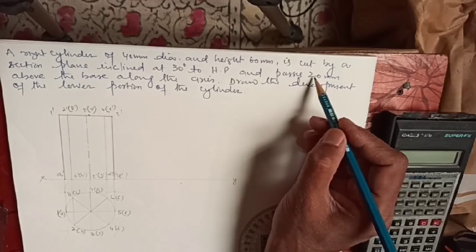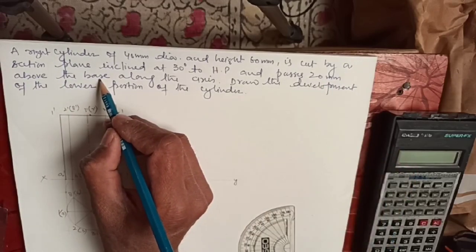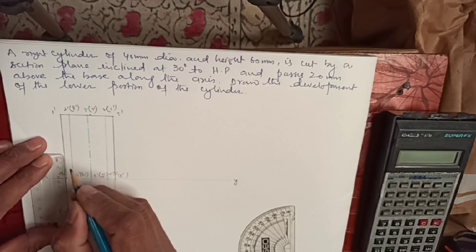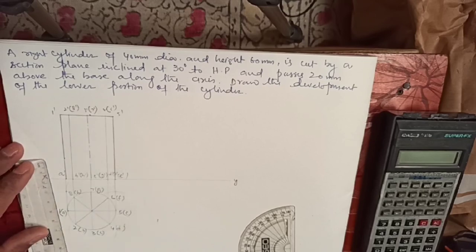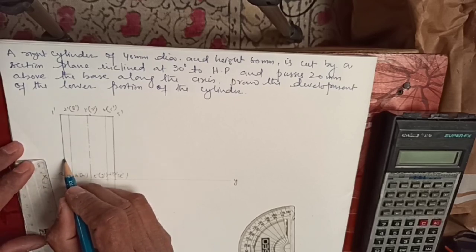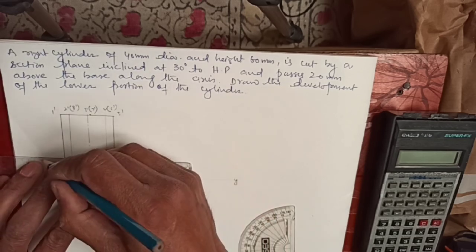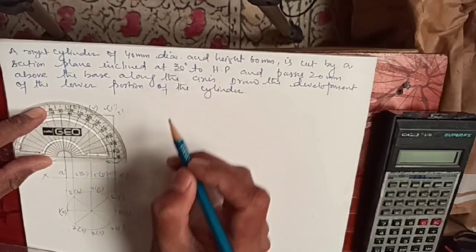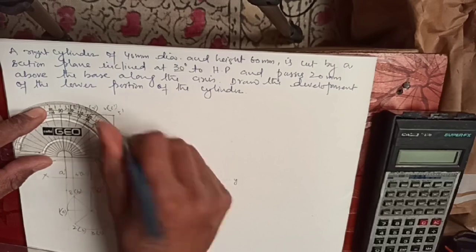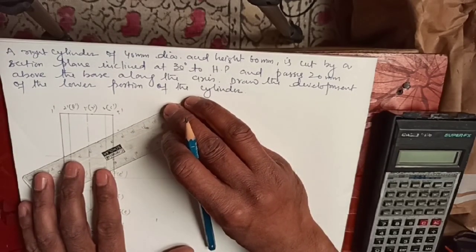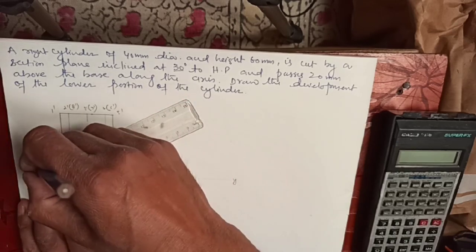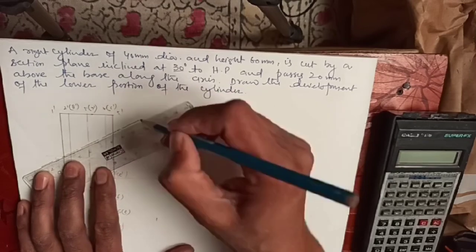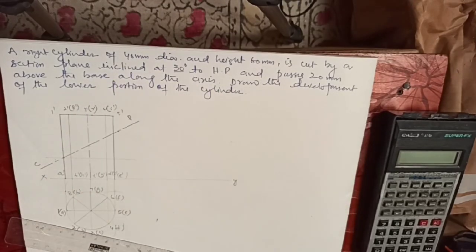This is a right circular cylinder with height 60 mm. From the central axis I take the height of 60, then draw the outer layout of the cylinder with the generators. I join its top as well, along with the other generators. On the top: one prime, two prime (bracket eight prime), three prime, seven prime, four prime, six prime, and five prime alone.